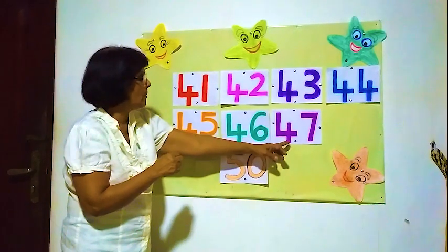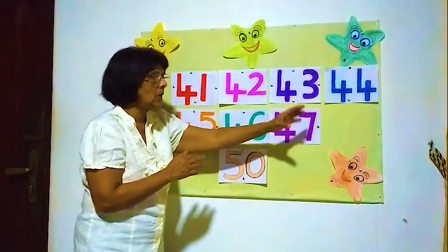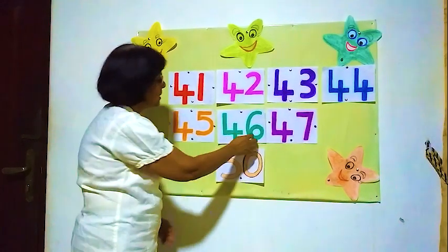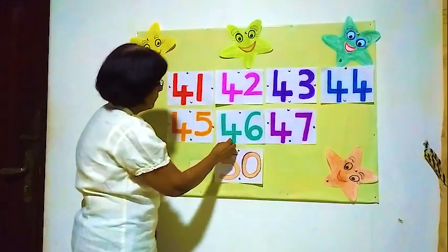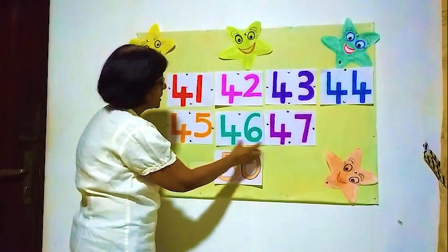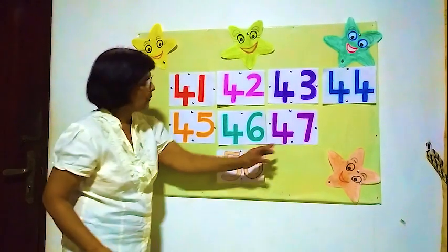Now the next number is 47. After 46 comes 47. 4 and 6 is 46, then 4 and 7 is 47.